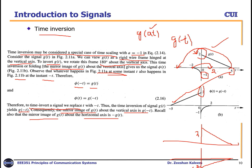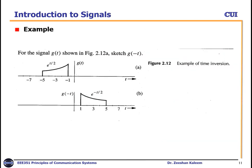So time inversion is the mirror image across the vertical axis, while the mirror image across the horizontal axis is minus g(t). As a worked example: for the signal g(t) in figure 2.11, to sketch g(minus t), we do not change amplitudes — we just mirror. So minus 5 moves to 5, minus 1 moves to 1, and 1 moves to minus 1. This is the example of time inversion.